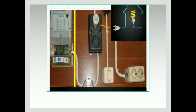Kalau kita perhatikan pada gambar di sini, ada sebuah sumber listrik, baterai atau akumulator, pengaman atau sekering, beban atau lampu, kontrol atau saklar, konduktor atau kabel. Apabila saklar dihubungkan, maka akan terjadi pengaliran energi listrik sehingga akan terjadi penyalaan pada lampu.